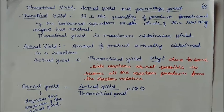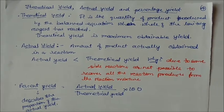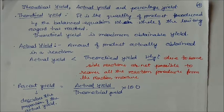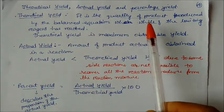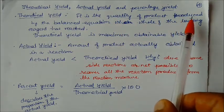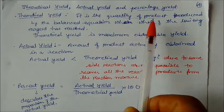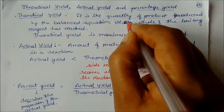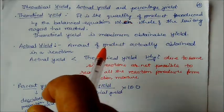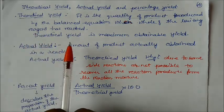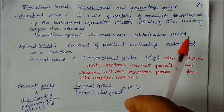Next is theoretical yield, actual yield, and percentage yield. Theoretical yield is the quantity of product produced by the balanced equation when the whole limiting reagent has reacted — it is the maximum, optimum yield. Actual yield is the amount of product actually obtained in a reaction, which is always less than the theoretical yield.